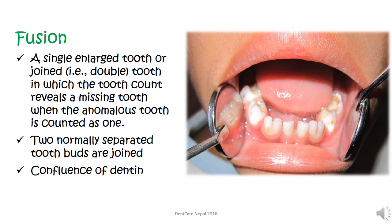Fusion is a single enlarged or joined tooth in which the tooth count reveals a missing tooth when the anomalous tooth is counted as one. Two normally separated tooth buds are joined, and in fusion there is confluence of dentine, unlike in concrescence where only the cementum of two teeth meets. In this picture, we can see that the mandibular lateral incisor and the mandibular canine have fused, and when those two teeth are counted as one, it is revealed that a tooth is missing.